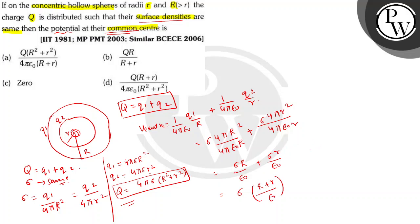This will be Q upon 4π, R plus r upon epsilon 0. We substitute the value of sigma, that is Q upon 4π times R square plus r square.